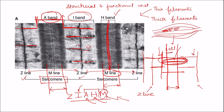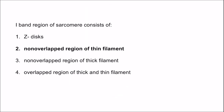Coming back to the MCQ: the I band region of sarcomere consists of the non-overlapped region of thin filament, and it is the lighter zone because it is non-overlapped. The non-overlapped region of the thick filament is the H band, which is also lighter. There is no particular zone defined for the overlapped region of thick and thin filament — that is simply the overlapping region.